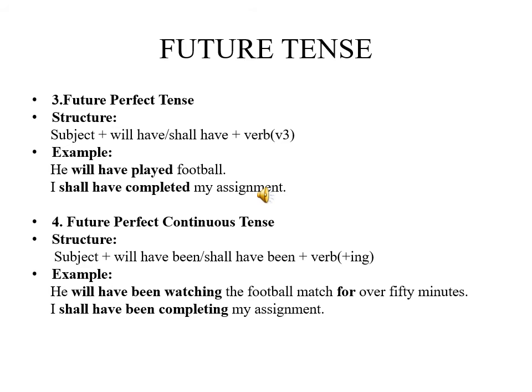Fourth type of future tense is future perfect continuous tense. Its structure is subject plus will have been or shall have been plus verb fourth form, that is ING. Example, he will have been watching the football match for over 50 minutes. I shall have been completing my assignment.